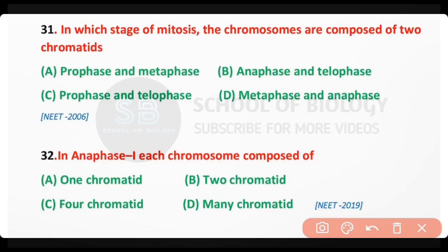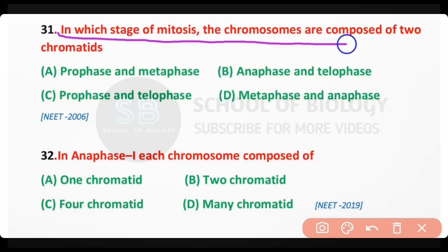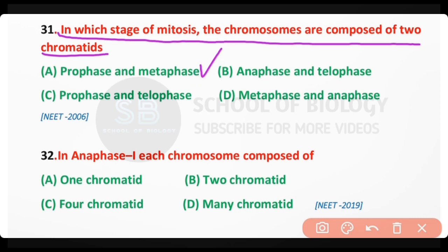Question number 31. In which stage of mitosis are the chromosomes composed of two chromatids? Options: prophase and metaphase; anaphase and telophase; prophase and telophase; metaphase and anaphase. The correct answer is option A. At prophase and metaphase, each chromosome is composed of two chromatids.